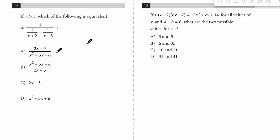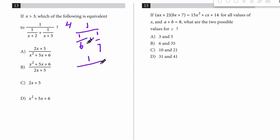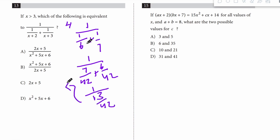Question 12: if x is greater than 3, which of the following is equivalent? I like to plug in a number — I'll use 4 — giving 1 over (1/6 plus 1/7). Using common denominators: 7/42 plus 6/42 equals 13/42, so we get 42 over 13. Testing the answer choices: options without fractions won't work. Testing the top fraction option: 2x plus 5 with x equals 4 gives 13, and it's flipped, so the answer is B.